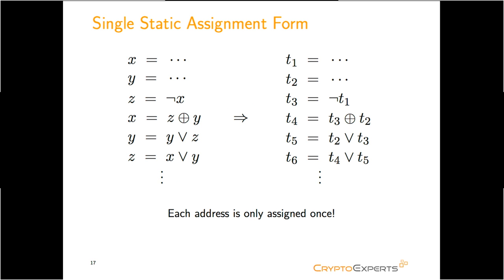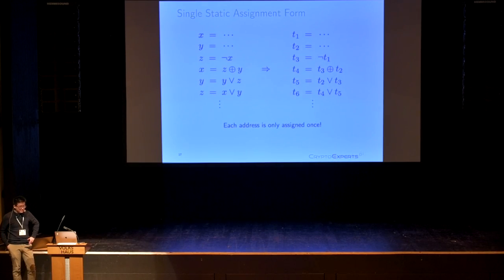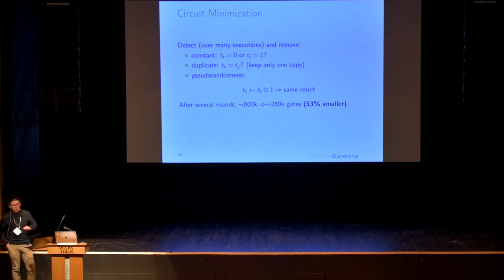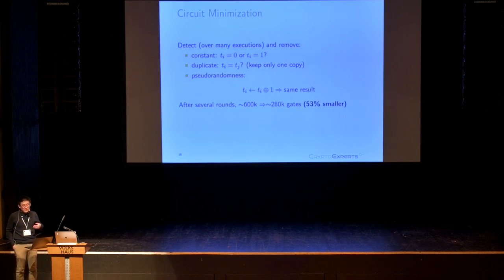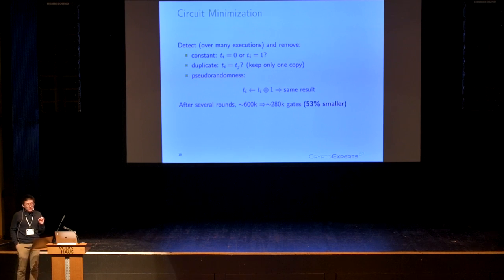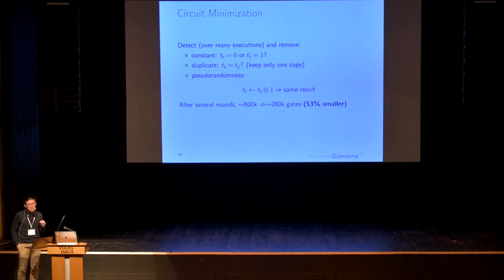Now we transform the Boolean circuit into single static assignment form, which means each intermediate variable is assigned exactly once and all accesses to it are after its assignment. Then we try to minimize the circuit since it's very large. Basically, we observe an intermediate variable over many executions to see whether it's a constant. If so, we replace its appearances with this constant value and propagate it. We also detect whether two intermediate variables are equal to each other over many executions — if so, we treat them as duplicates and keep only one copy.